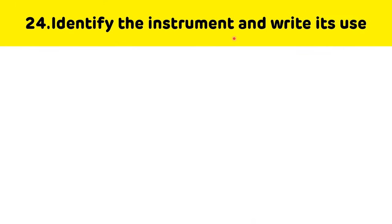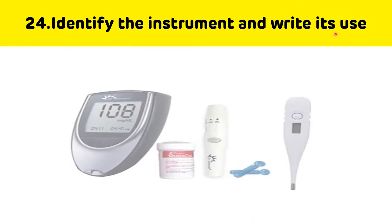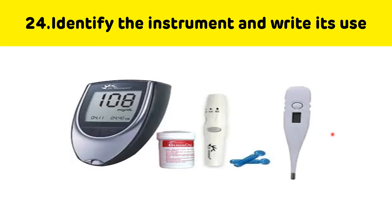Identify the instrument and write its use. This is a glucometer, which is a point-of-care testing (POCT) device used for the estimation of glucose.